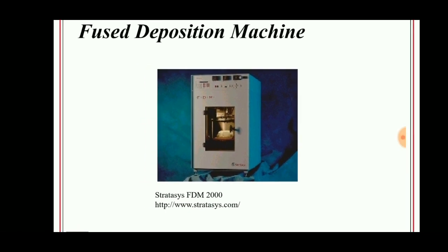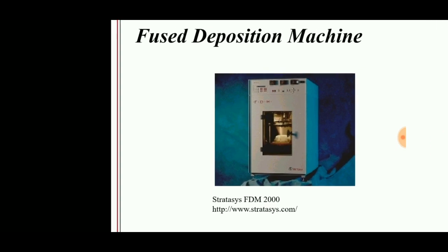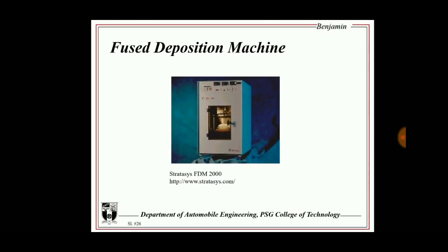The fused deposition machine consists of a heater so that the filament can enter into it. The heater heats the filament and the semi-solid material is deposited on the surface so that the surface can form a layer. Then layer by layer the semi-solid liquid is pasted on it so that a CAD model is converted into a real life product.